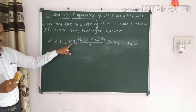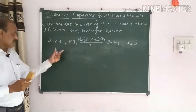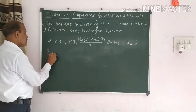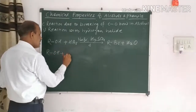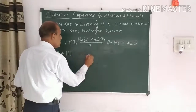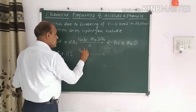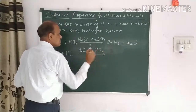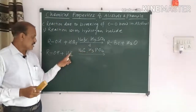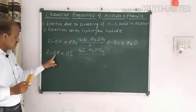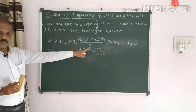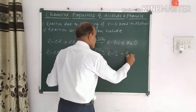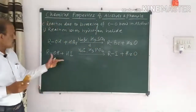The same reaction applies for HI — only the conditions are changed. Taking alcohol ROH reacting with HI, which comes from sodium iodide or potassium iodide and phosphoric acid H3PO4. By combination of these, HI is obtained. The OH and H combine, water is liberated, and RI is formed — that is, RI plus H2O. These reactions are due to the breaking of the C–O bond.